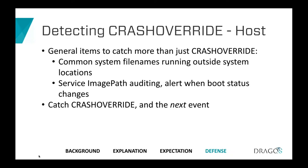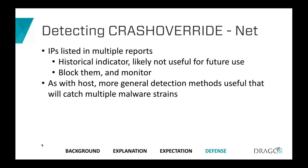Another tell is service image path auditing. For persistence, the malware points a non-critical service's registry image path key to the malicious executable. Similarly, the wiper module points image paths to null values. Auditing what image path values are pointing to could be very valuable in catching early stages of an infection. By applying these measures, you'll catch Crash Override and the next event, since these are fundamental adversary operating methods — not esoteric techniques.